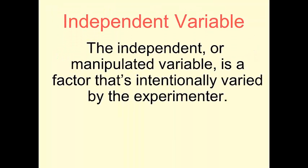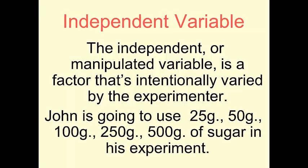An independent or manipulated variable is the factor that's intentionally varied or intentionally changed by the person doing the experiment. In this case, it would be you. In this example, it would be John. John is going to use 25 grams, 50 grams, 100 grams, 250 grams, and 500 grams of sugar in his experiment.